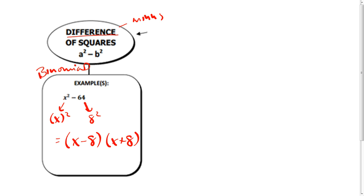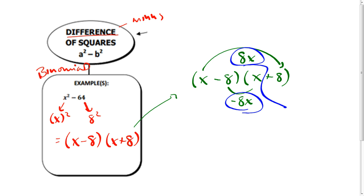If I multiply this out, when I multiply this I get 8x, and when I do this I get negative 8x, so that sums out to zero. You don't actually get a middle term, and that's why that works.